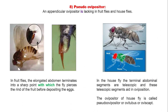Pseudo-ovipositor is generally found in fruit flies and house flies, which lack an appendicular ovipositor. In the fruit fly, the elongated abdomen terminates into a soft point, with which the fly pierces the end of fruit and lays eggs. In house flies, the terminal abdominal segments are telescopic and these telescopic segments help in oviposition. The ovipositor of the house fly is called a pseudo-ovipositor.